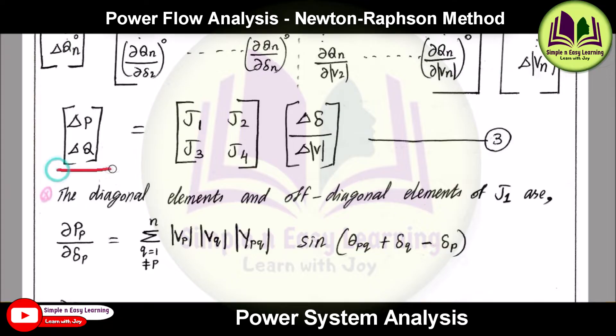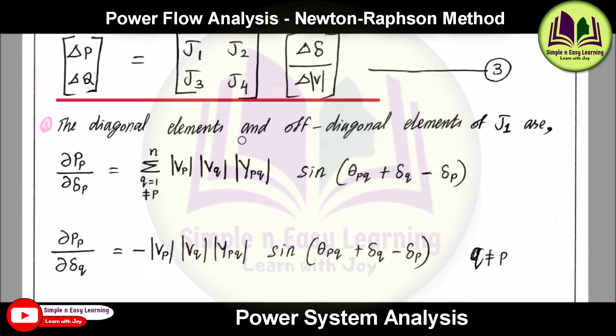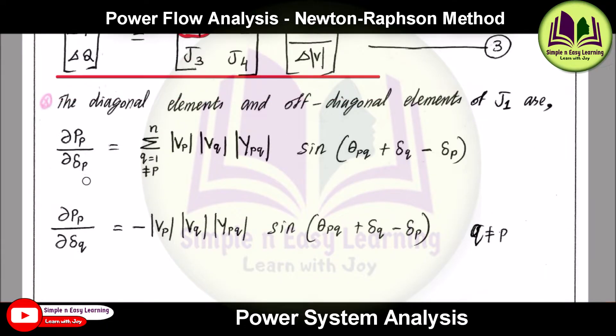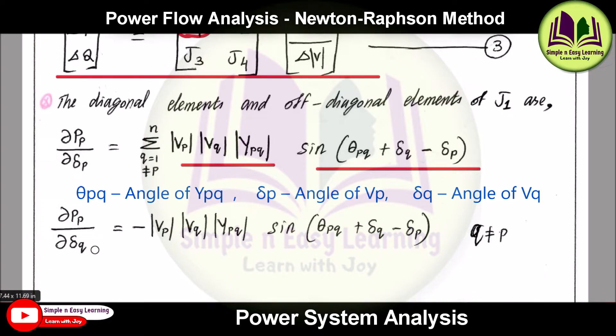Diagonal elements and off-diagonal elements of J1 matrix: J1 is the first term matrix. This J1 matrix will be having ∂Pp/∂δp, that will be equal to summation q=1 to n (and q≠p) Vp|Vq||Ypq| sin(θpq + δq - δp). Similarly ∂Pp/∂δq...